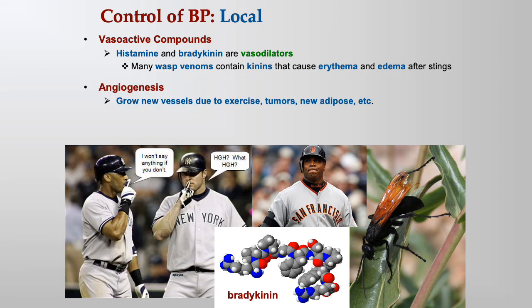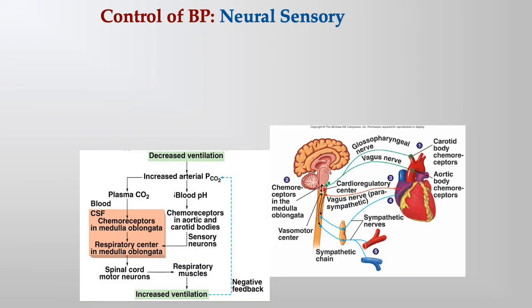Angiogenesis — growing new blood vessels due to exercise, tumors, or new adipose tissue — raises blood pressure because it increases blood vessel length, increasing peripheral vascular resistance. This is regulated by growth factors such as insulin-like growth factor and human growth factor. Anabolic steroids cause muscles to grow larger, also triggering angiogenesis and raising blood pressure.